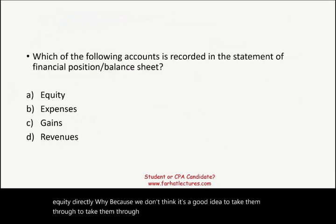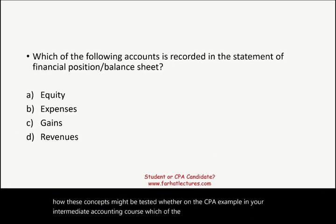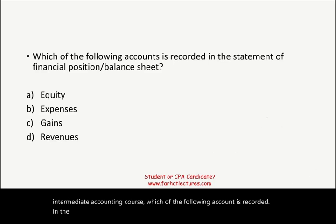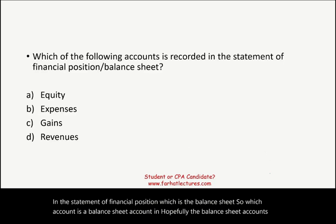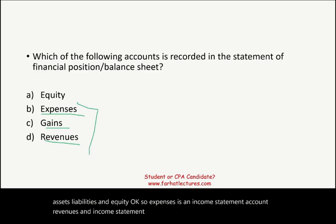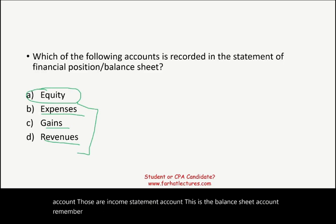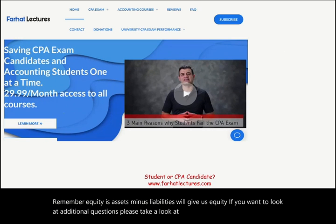Let's look at an example of how these concepts might be tested on the CPA exam or in your intermediate accounting course: which of the following accounts is recorded in the statement of financial position — the balance sheet? The balance sheet accounts are assets, liabilities, and equity. Expenses, revenues, and gains are income statement accounts. Equity is a balance sheet account — assets minus liabilities gives us equity.